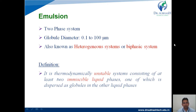The globule diameter ranges in between 0.1 to 100 micrometers. As a definition, we can say it is a thermodynamically unstable system consisting of at least two immiscible liquids — one is the oily phase and another one is the aqueous phase.